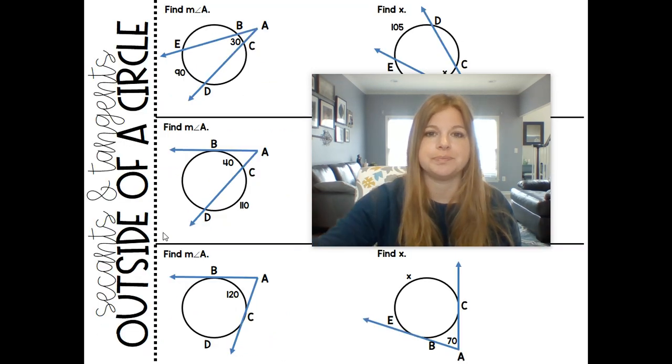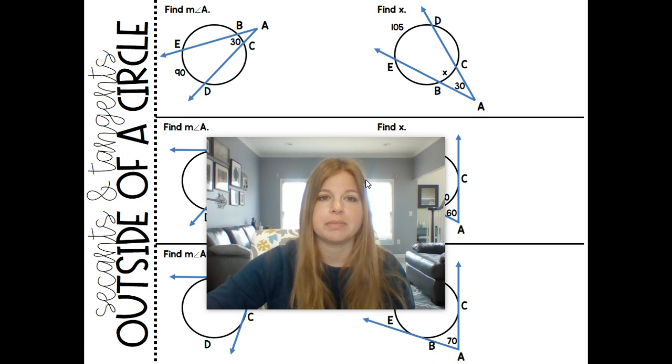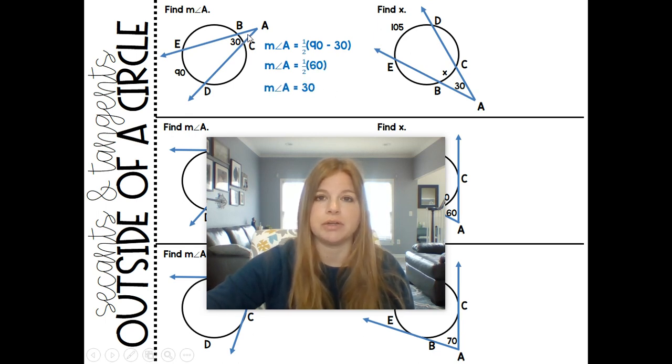Let's take a look at these first two. If I wanted to find the measure of angle A, it would be the measure of angle A is equal to one half times the outer arc of 90 minus the inner arc of 30, which becomes simply 30 degrees. That's it. 90 minus 30 is 60. Half of 60 is 30.